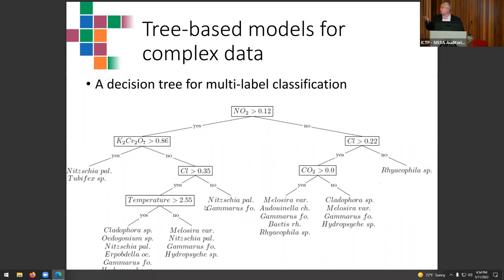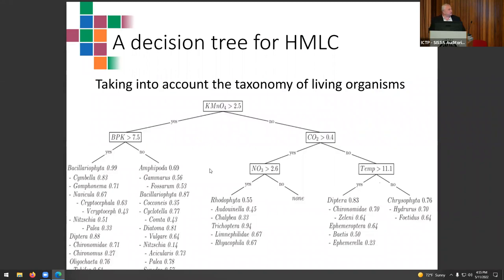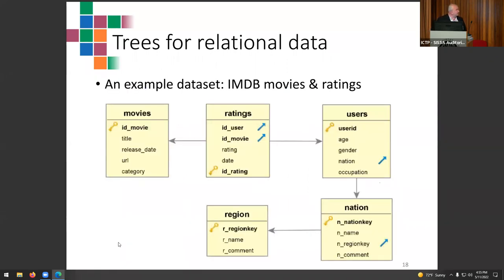The point is that we have explainable models we can examine. In a very similar fashion, we can also explain models for multi-label classification. Here we have a decision tree for multi-label classification that looks at nitrate concentration and chemical oxygen demand. If both are high, we predict the presence of Navicula palea — an alga very tolerant to pollution — and Tubifex, worms that really like dirty water. These are bio-indicator species indicative of such conditions.